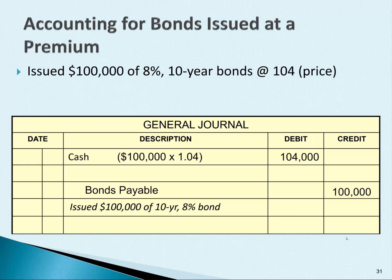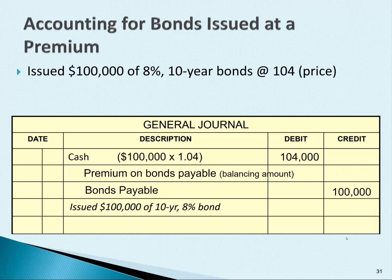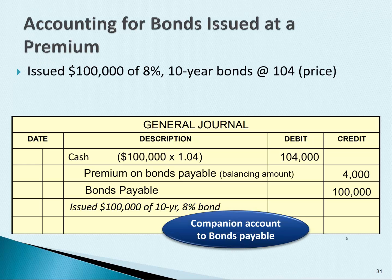Now the transaction doesn't balance. The balancing amount will go in an account called premium on bonds payable. The dollar amount that balances the transaction is a credit of $4,000. Premium on bonds payable is a companion account to bonds payable.